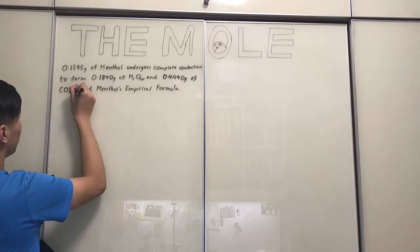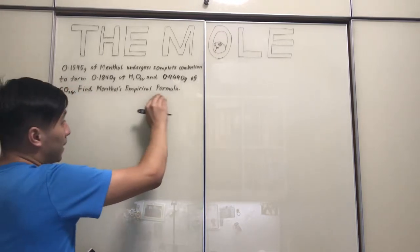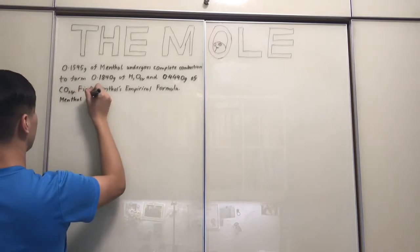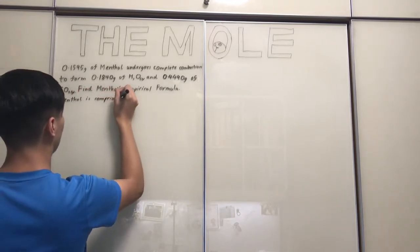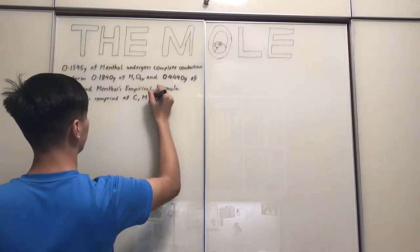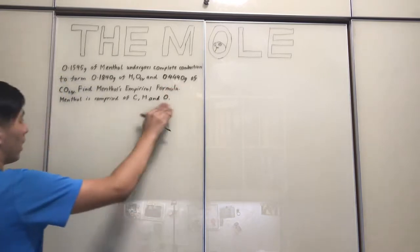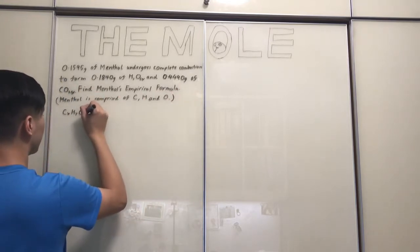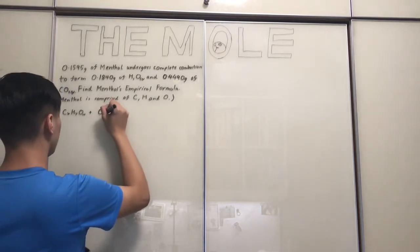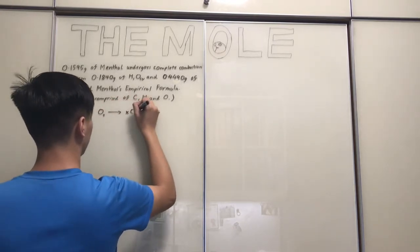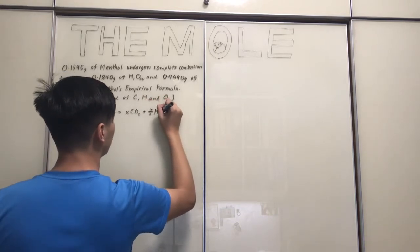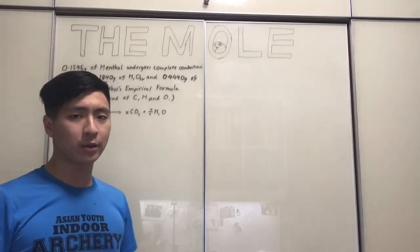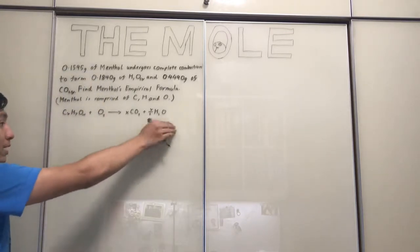So, find menthol's empirical formula. Menthol is comprised of carbon, hydrogen, and oxygen. So in this sense, CXHY-alpha plus O2 gives us XCO2 plus Y/2 H2O. These X, Y, and alpha are basically just constants — they don't mean much for the calculations, but it's useful to write out the equation just to be sure what we're doing.